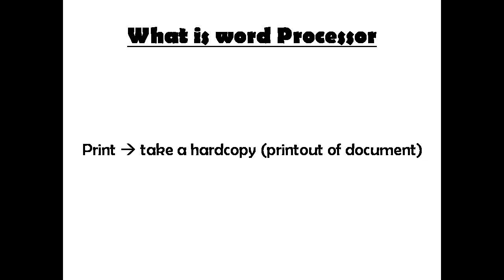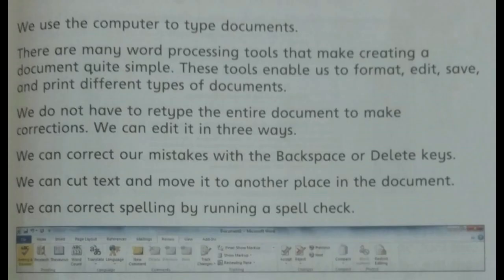The fourth option is print. You can print your document by pressing the shortcut Ctrl+P. Ctrl+P is the shortcut for printing. By printing, you can take a hard copy or a printout of a document.